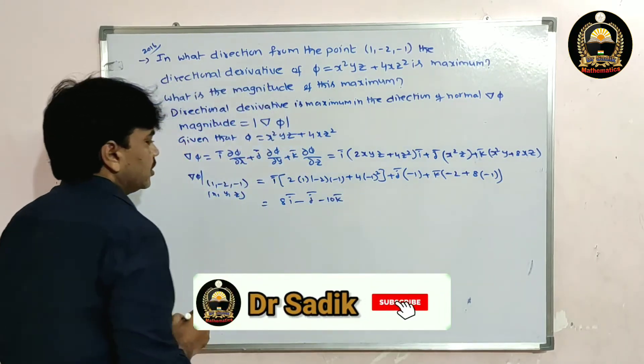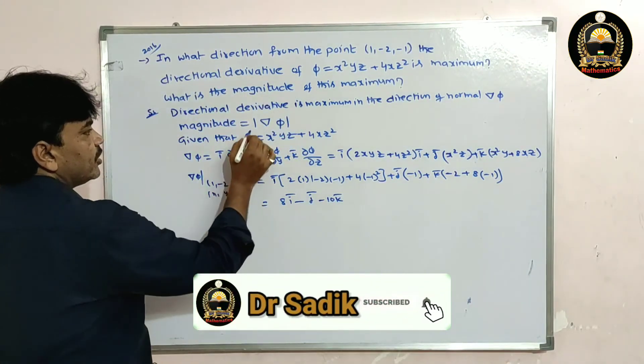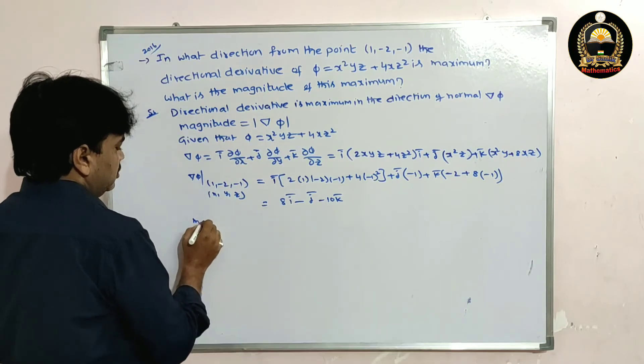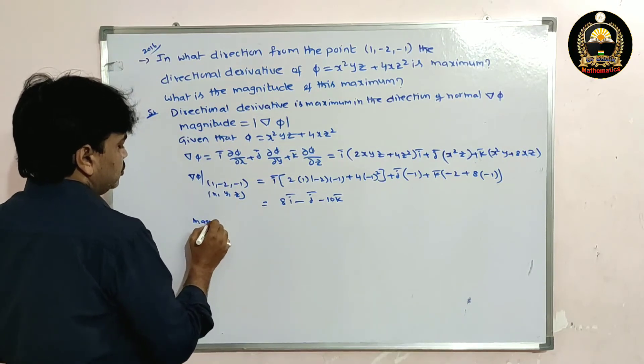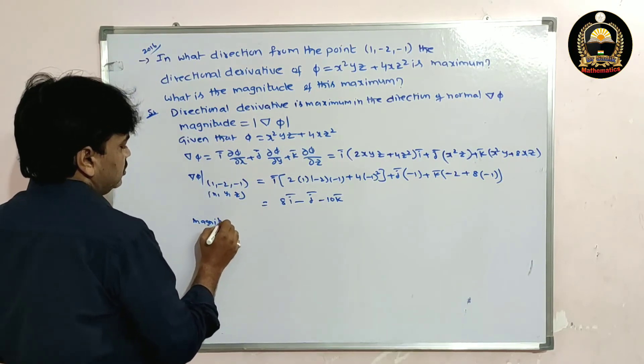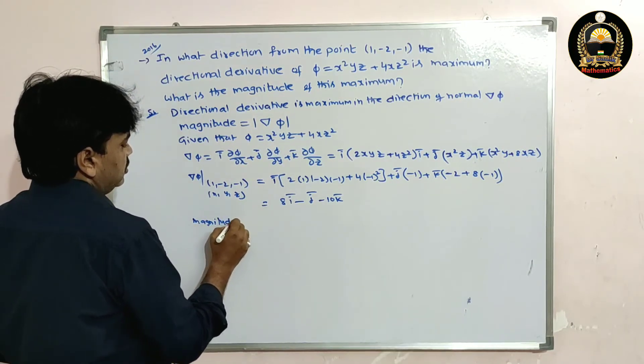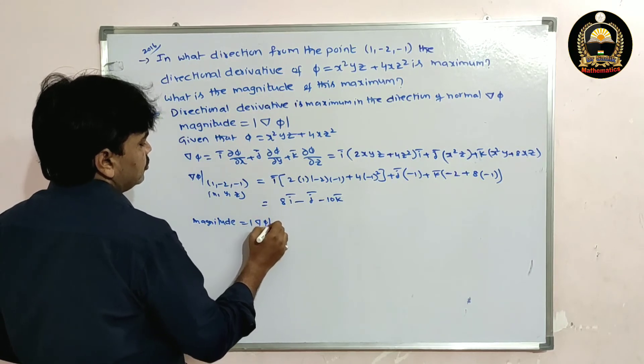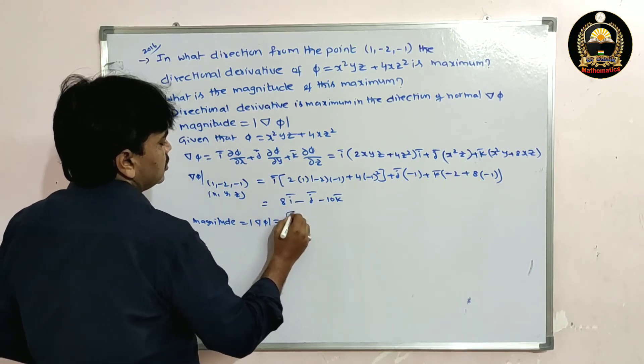Now find the magnitude: modulus of del φ = √(8² + (-1)² + (-10)²).